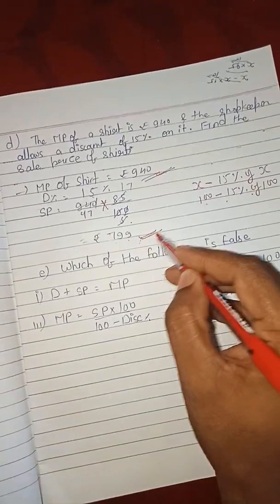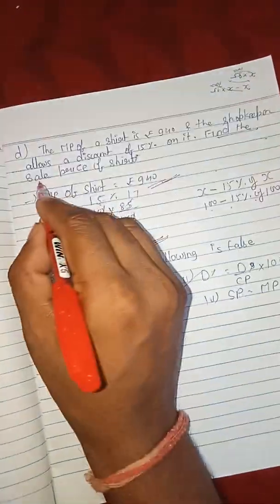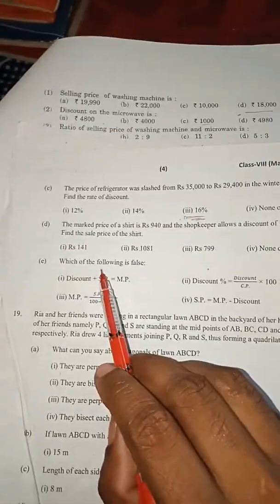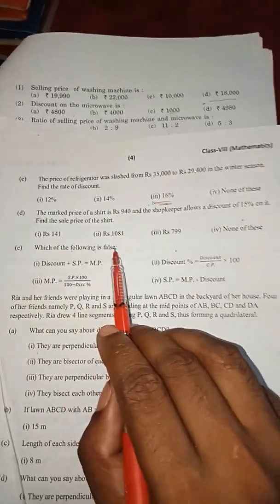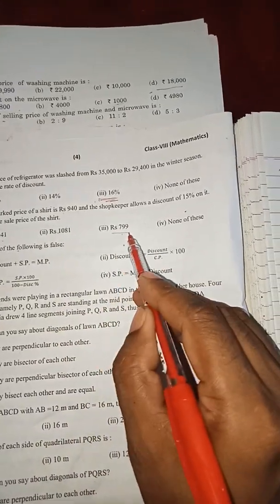940 rupees is the marked price and 799 rupees is the selling price. The question is asking only to find the sale price, means selling price of shirt. Now four options are given: 141, 1,081, 799. So the answer will be 799.